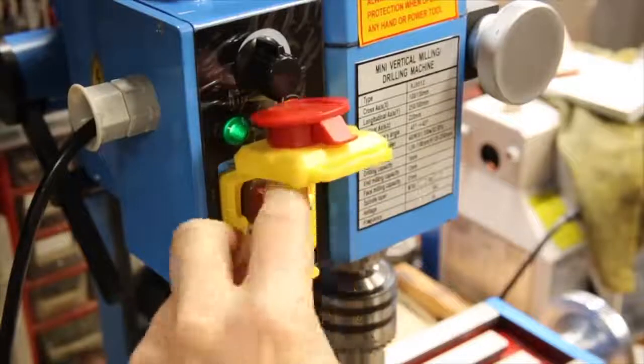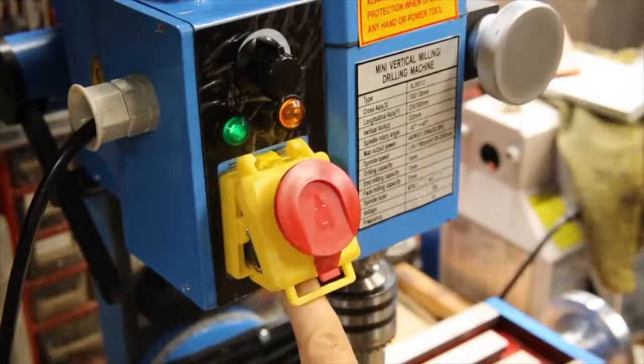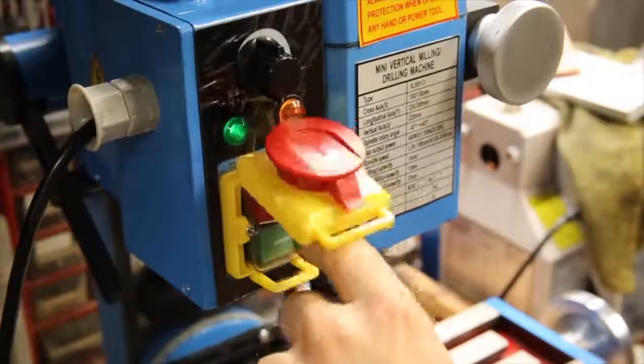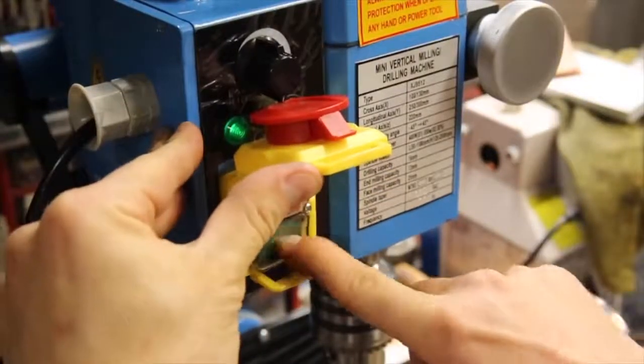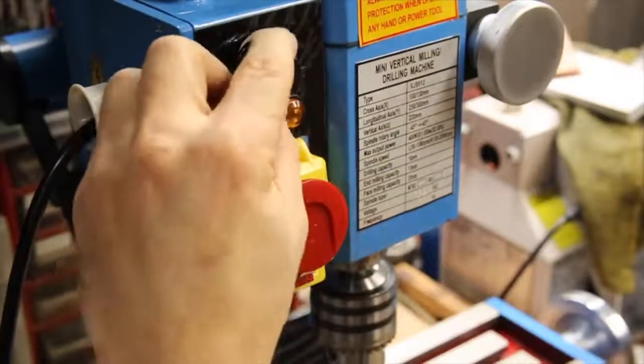To turn this mill on, it seems that you have to have the dial turned all the way to the slowest or off position before pushing the green on button. After that combination of events has taken place, the dial can be increased to start the mill and vary the speed.